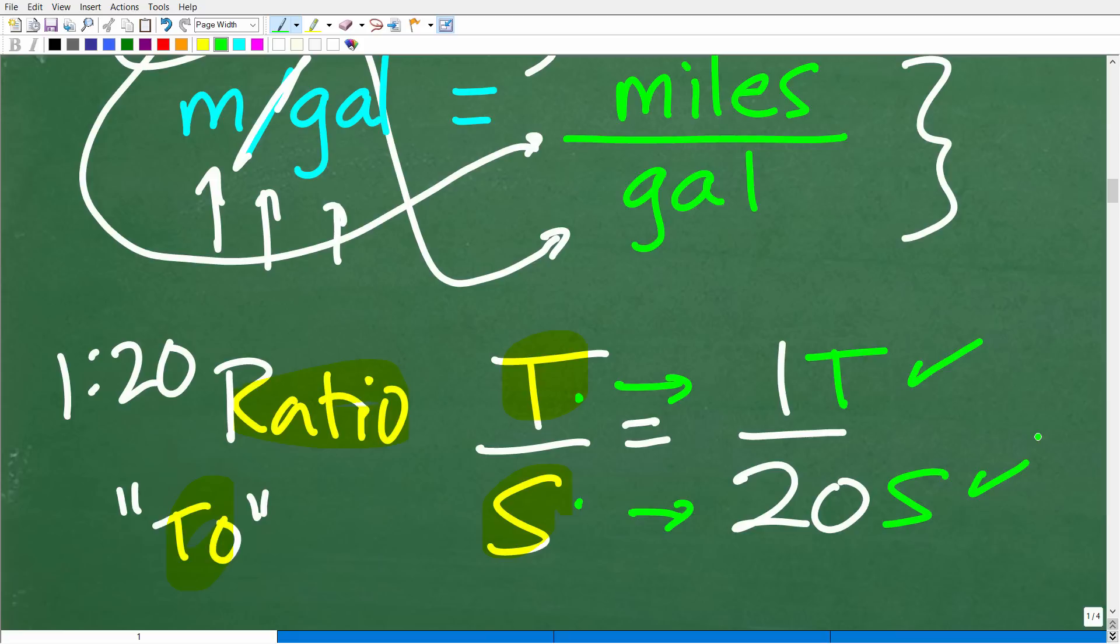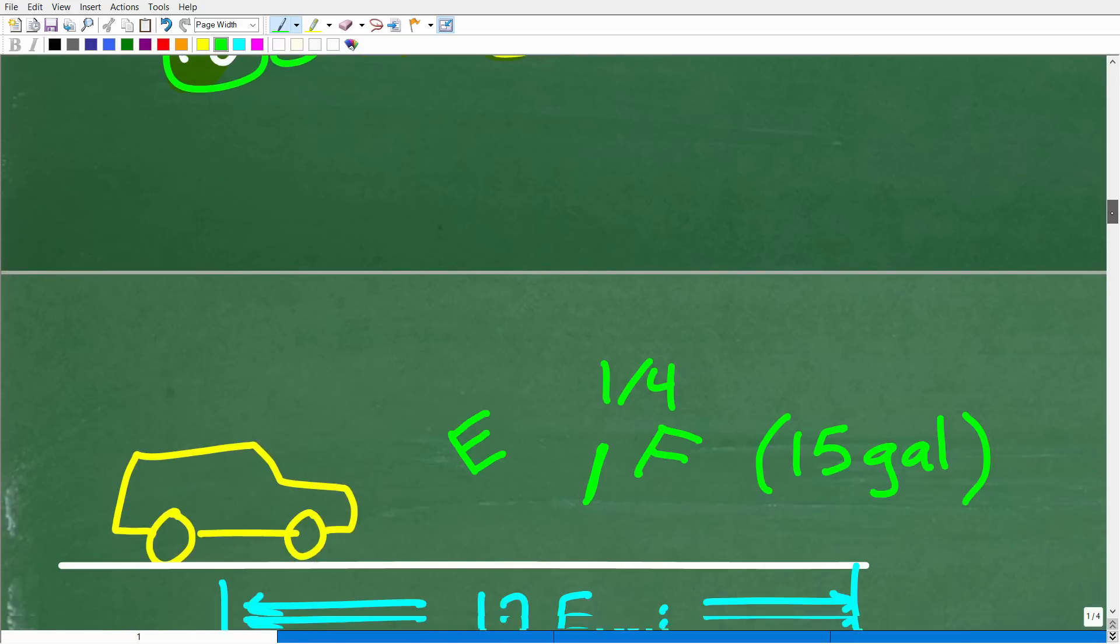But a dead giveaway, again, in terms of the difference between ratios and rates is the words, okay? 2, you're going to associate with ratios. And per, you're going to associate with rates. All right, so now let's go ahead and get back to our problem.